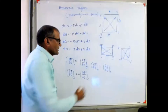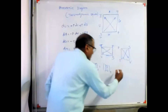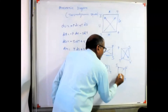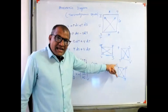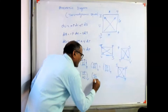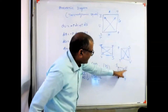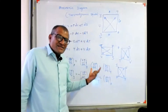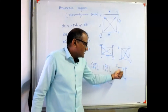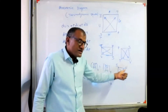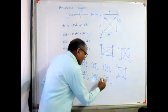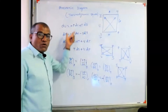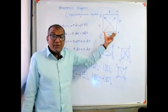For the last Maxwell relation, I rotate the diagram one more time. The last Maxwell relation is: (∂S/∂P) at constant T equals −(∂V/∂T) at constant P. Considering the sign for both first variables: for S, the arrow points away, and for V, the arrow points towards — the directions are opposing, so the sign is negative. These four are the Maxwell relations that can be obtained from the mnemonic diagram, along with the four fundamental property relations.